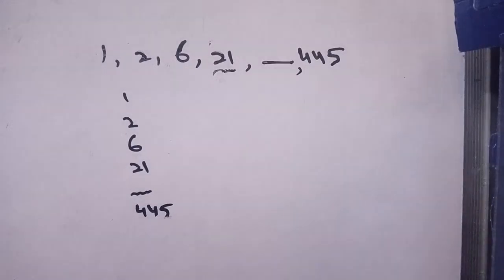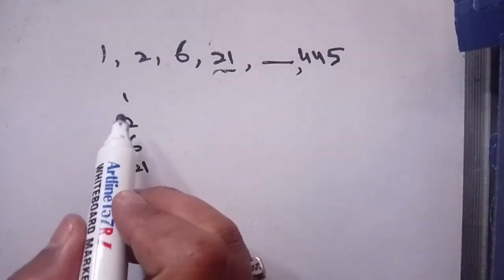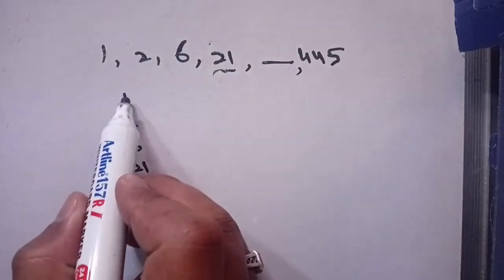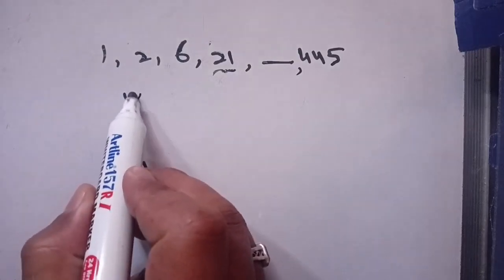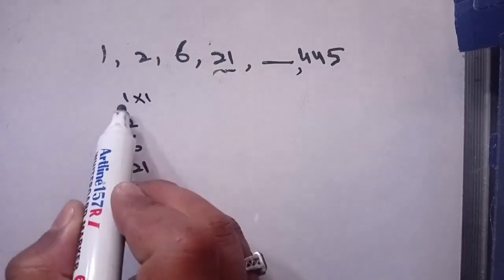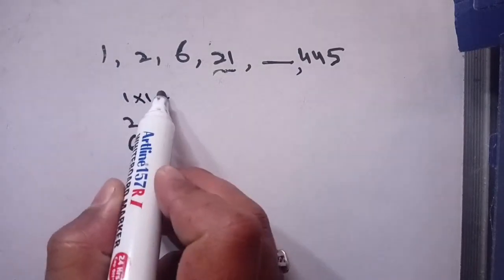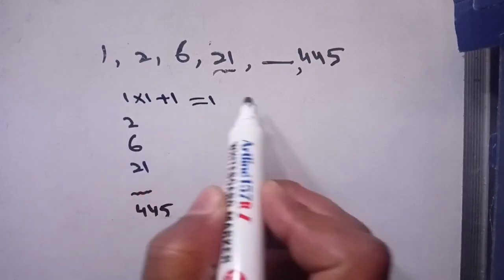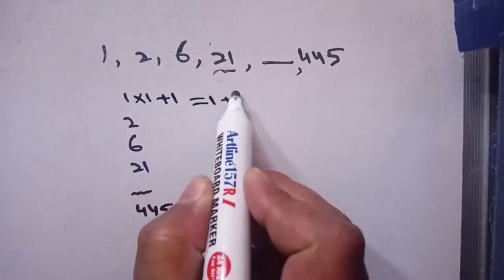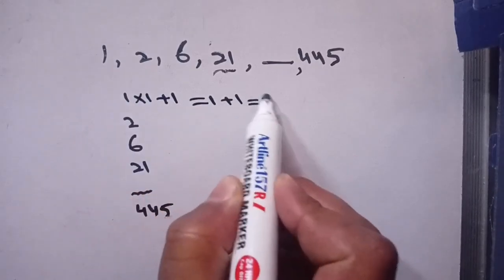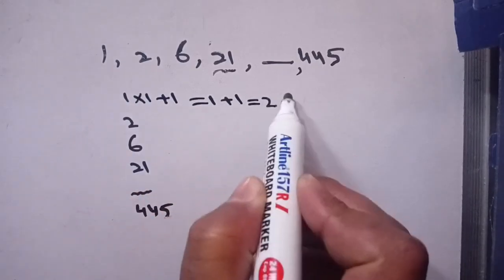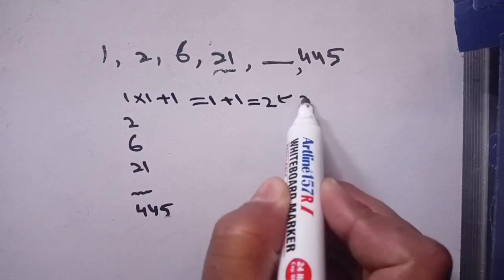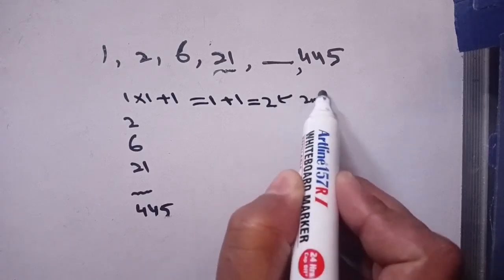Now let us find another pattern. When you multiply the first term by 1 and add 1, it becomes 1 times 1 equals 1, and plus 1 equals 2. This gives us the second term.